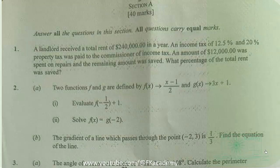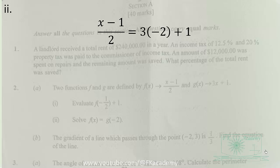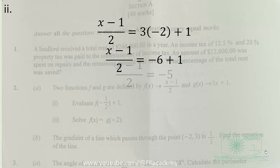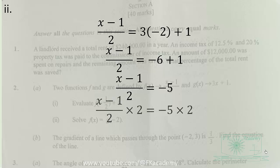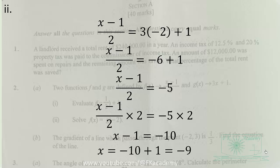For part (a)(ii), we solve f(x) = g(−2). This means substituting −2 into g(x) on the right-hand side, while keeping x in f(x). After evaluating and simplifying, we multiply through by 2 and get x = −10 + 1, which gives x = −9.